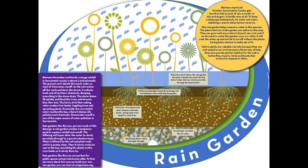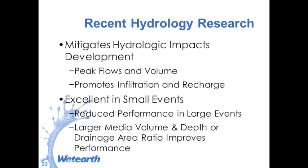This is an interpretive sign we did for one of our projects. A lot of these projects have education and outreach components, so we often include interpretive signs. You've got the ponding area, you can see the plant roots which can help with taking up pollutants, and the mulch layer tends to trap sediment and associated heavy metals — that should really be removed and replaced annually. The problem with not removing it is that you're leaving the sediment in the system, increasing potential for clogging. Bioretention mitigates peak flows and runoff volumes and performs very well in smaller rainfall events up to a few inches.